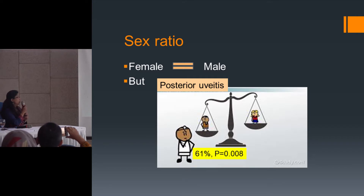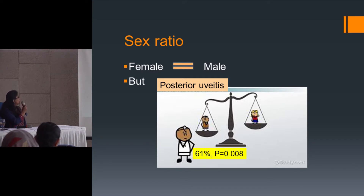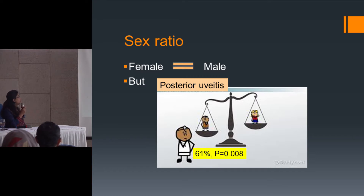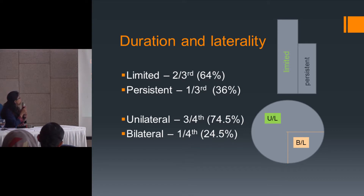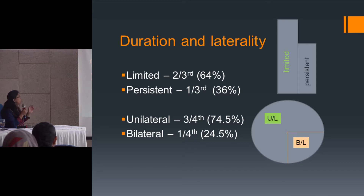In terms of sex ratio, male-to-female ratio is quite equal overall. But if we divide into different types of uveitis, surprisingly, posterior uveitis is more common in males — almost 61 percent. In terms of laterality and duration, we are happy to see that limited disease is more than persistent, which is good — about two-thirds limited and one-third persistent. More people have unilateral disease, so if they become blind, hopefully only one eye will be affected even with the best treatment.